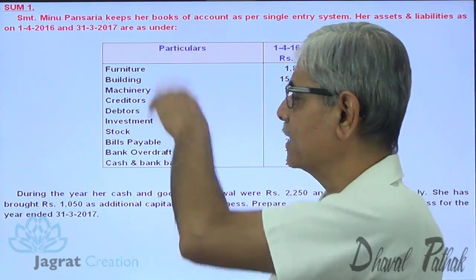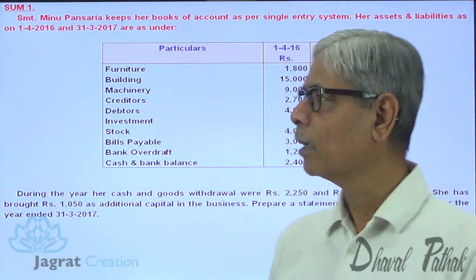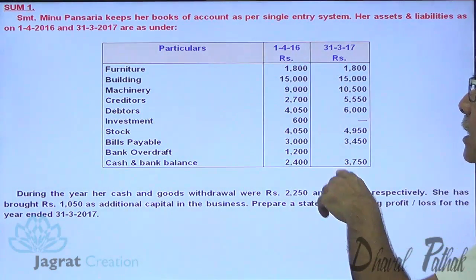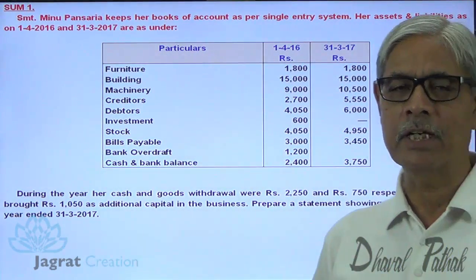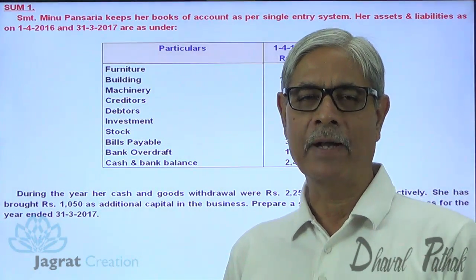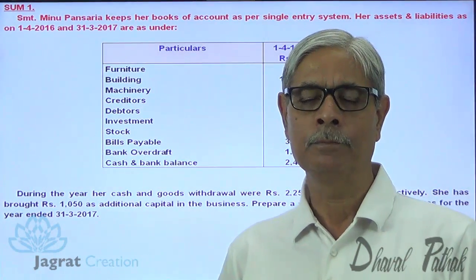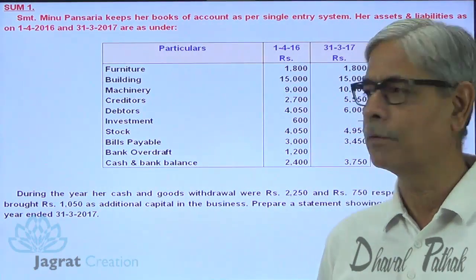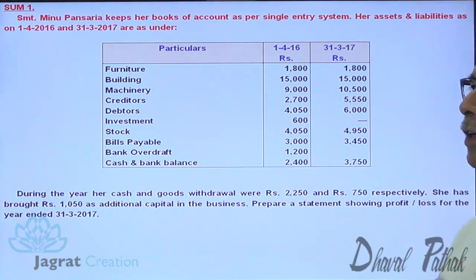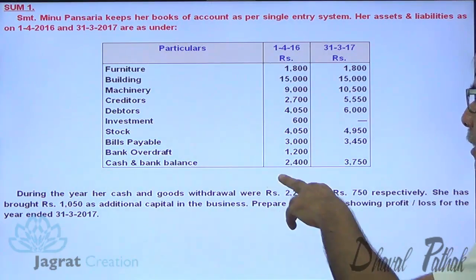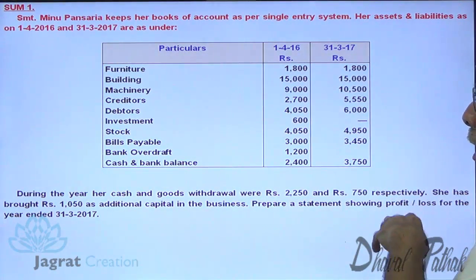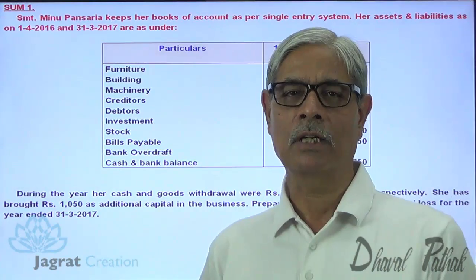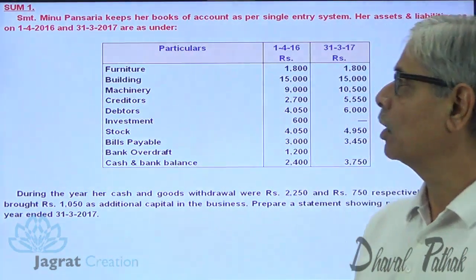In light of that we shall find out the profit for the business. First of all, I will prepare the opening statement of affairs taking into consideration all these details. Then I am going to prepare the closing statement of affairs. I will find out the capital at the beginning and at the end of the accounting period, and in light of the information about withdrawals and additional capital, I will find out the profit. Just observe the sum.